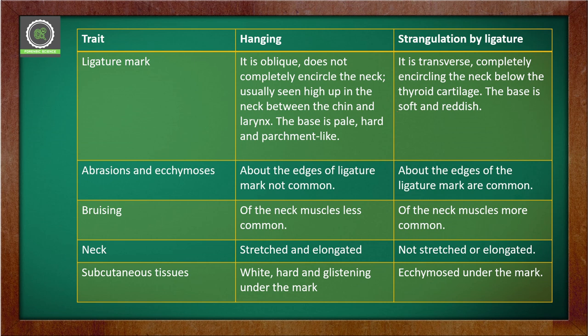We have made a table here. The first column tells about the traits and characteristics, then we have hanging and strangulation by ligature. Ligature is present in strangulation — this is strangulation by ligature. Hanging itself uses some material which people use to hang themselves up, and then we have the traits.